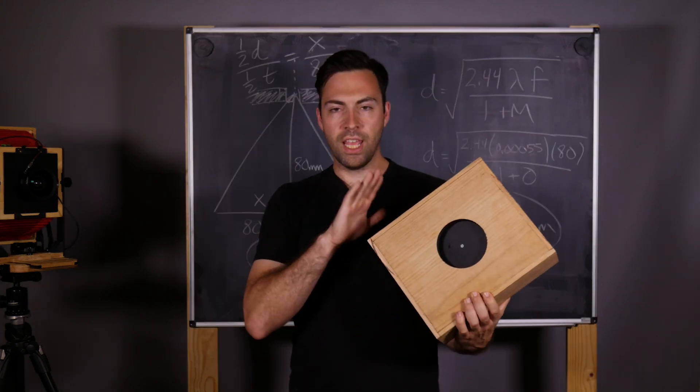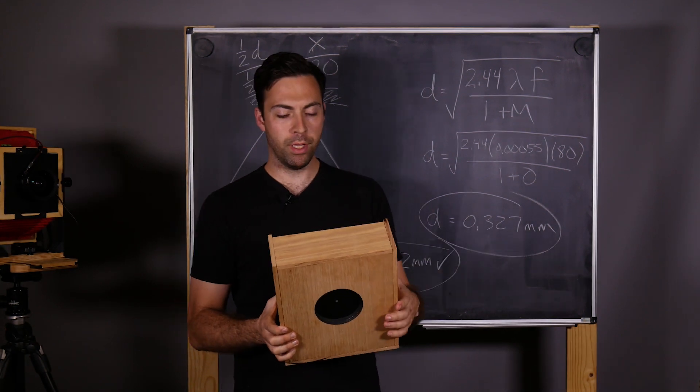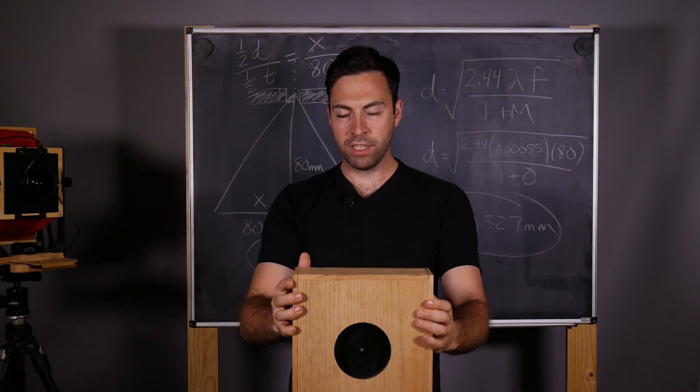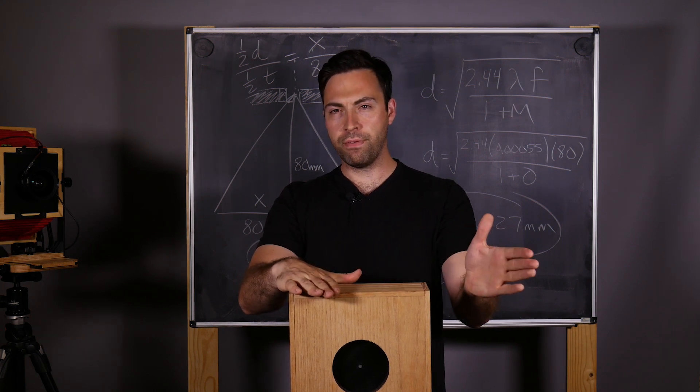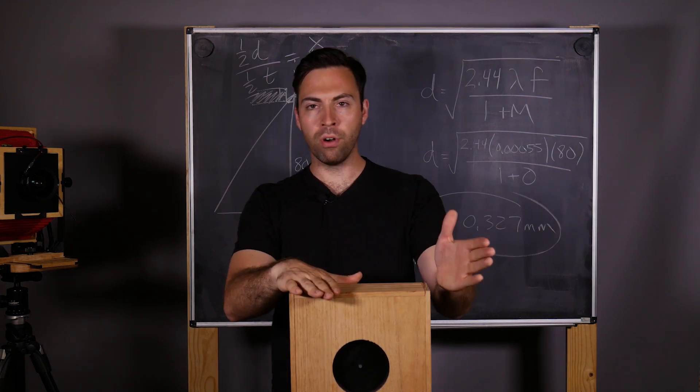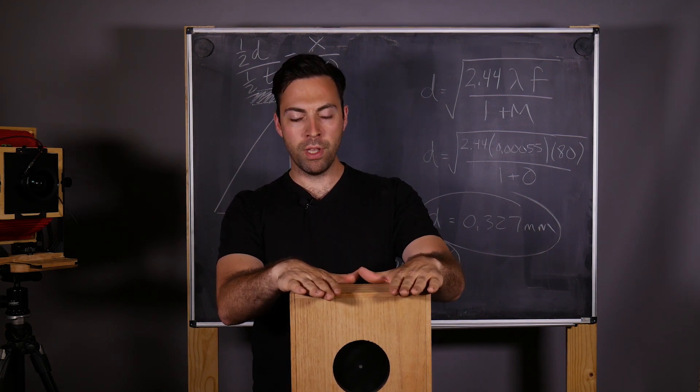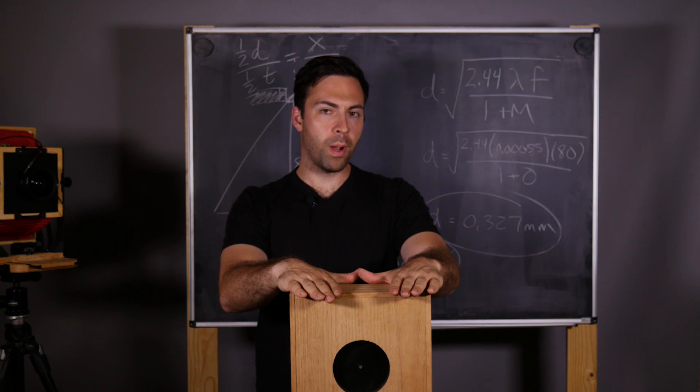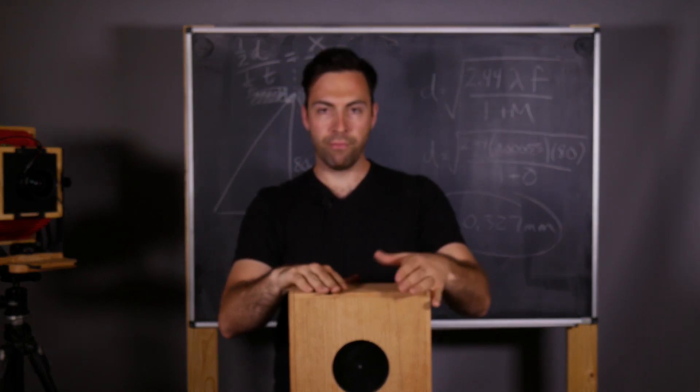Because this is an 80 millimeter focal length with a pinhole diameter of 0.3 millimeters, we have an effective f-stop of about f/266, which is really close to f/256, which is a power of two. So it should be really easy to calculate exposure values when we meter our scene. We'll go over that during worldwide pinhole photography day. We're actually going to take this camera out and photograph with it.